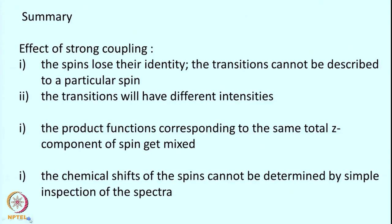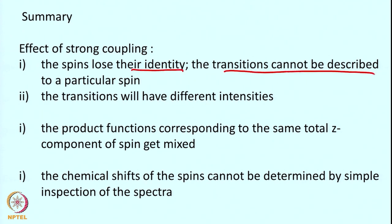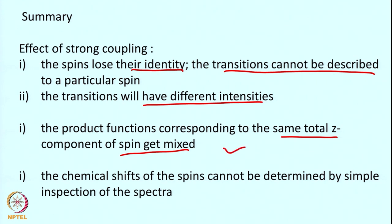To summarize the effect of strong coupling: strongly coupled spins lose their individual identity and transitions cannot be assigned to a particular spin. The analysis becomes more complicated. The two outer peaks have small intensity and the two inner peaks have greater intensity. The product functions corresponding to the same total Mz value get mixed. The chemical shift of a spin cannot be determined by simple inspection of the spectrum — it requires more rigorous analysis.